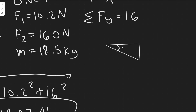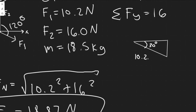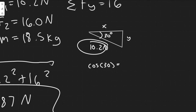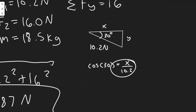We know the angle is 30 degrees and F1 is 10.2 newtons. We use trig functions to find the x and y components. Cosine of 30 equals adjacent over hypotenuse, so the x component equals 10.2 cosine of 30. That gives us the x component of F1.